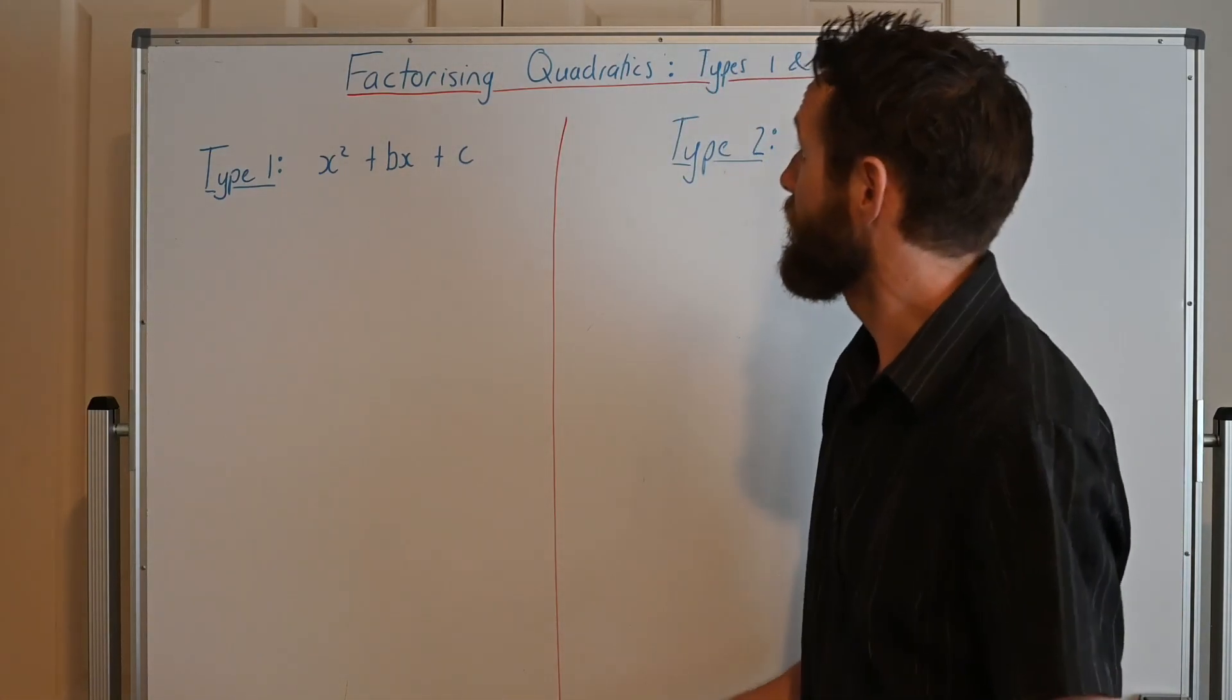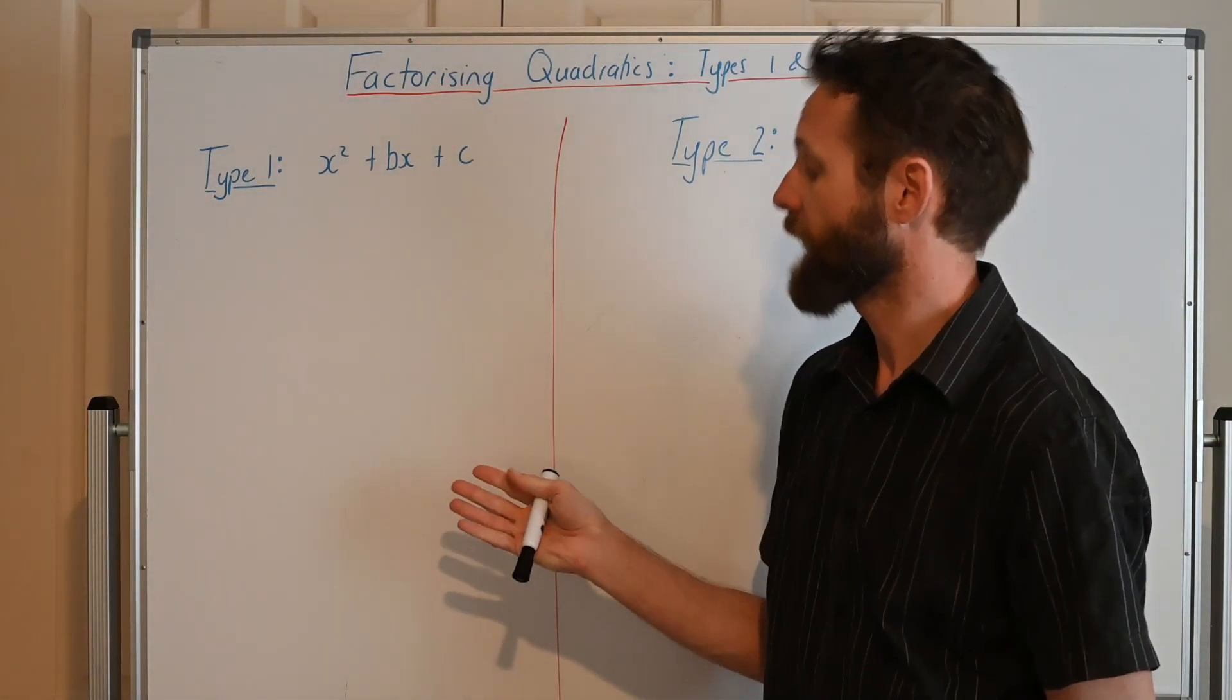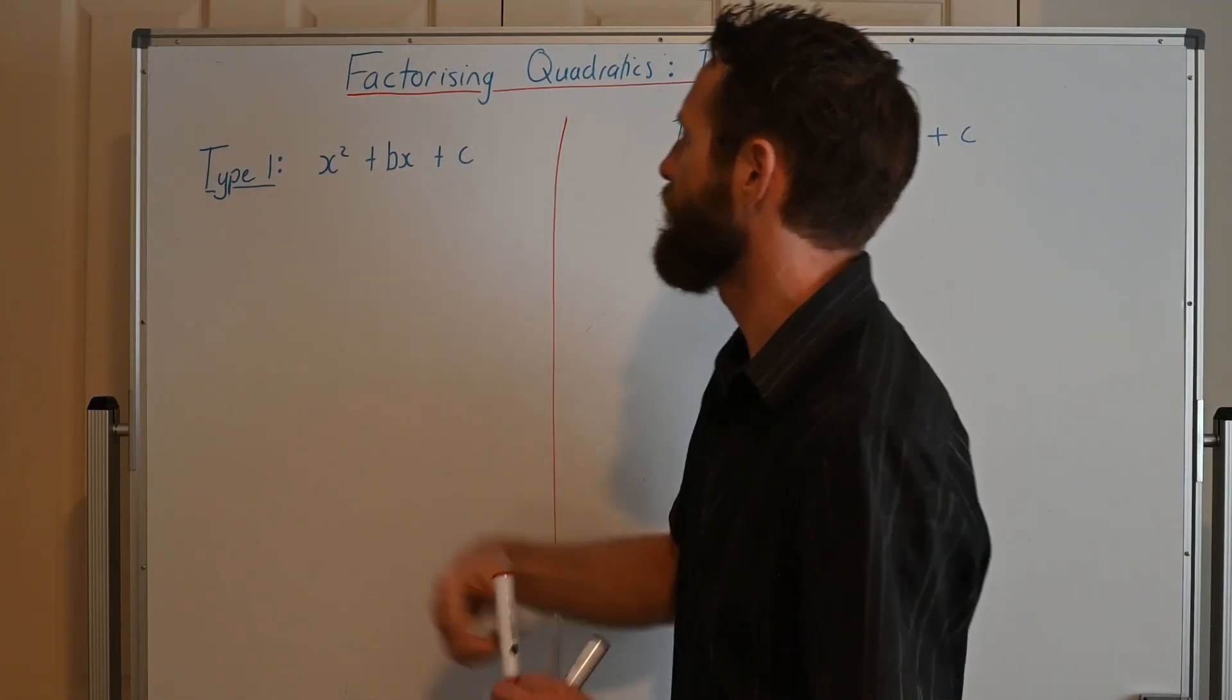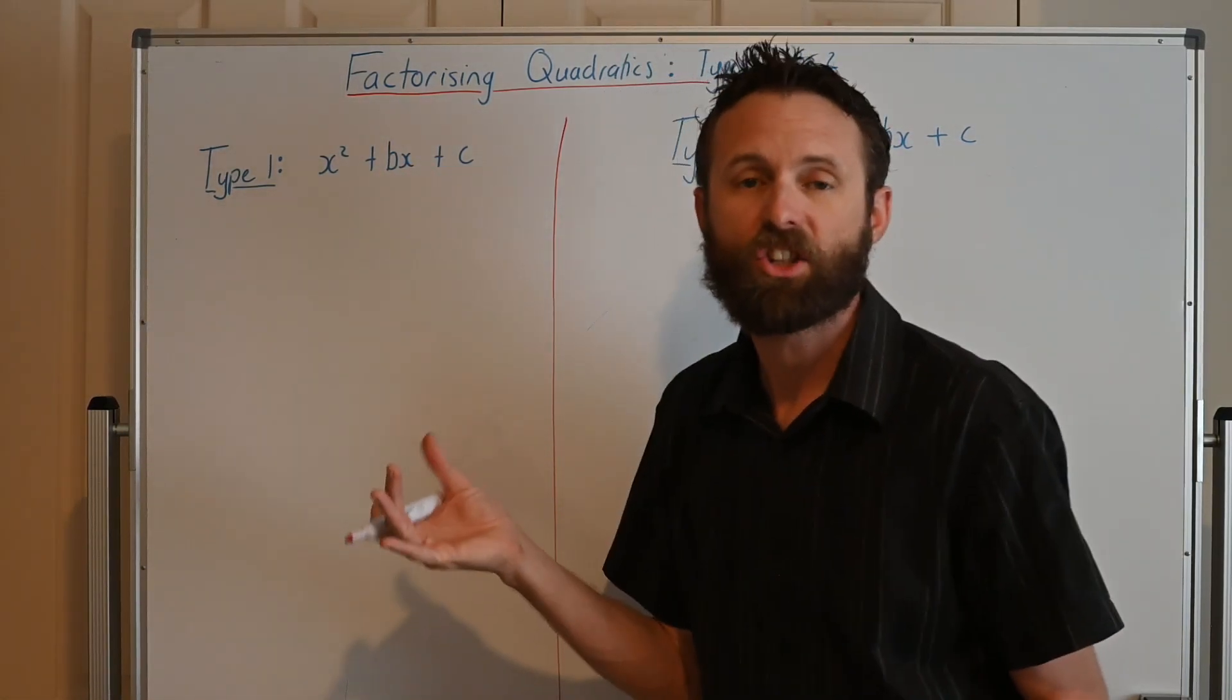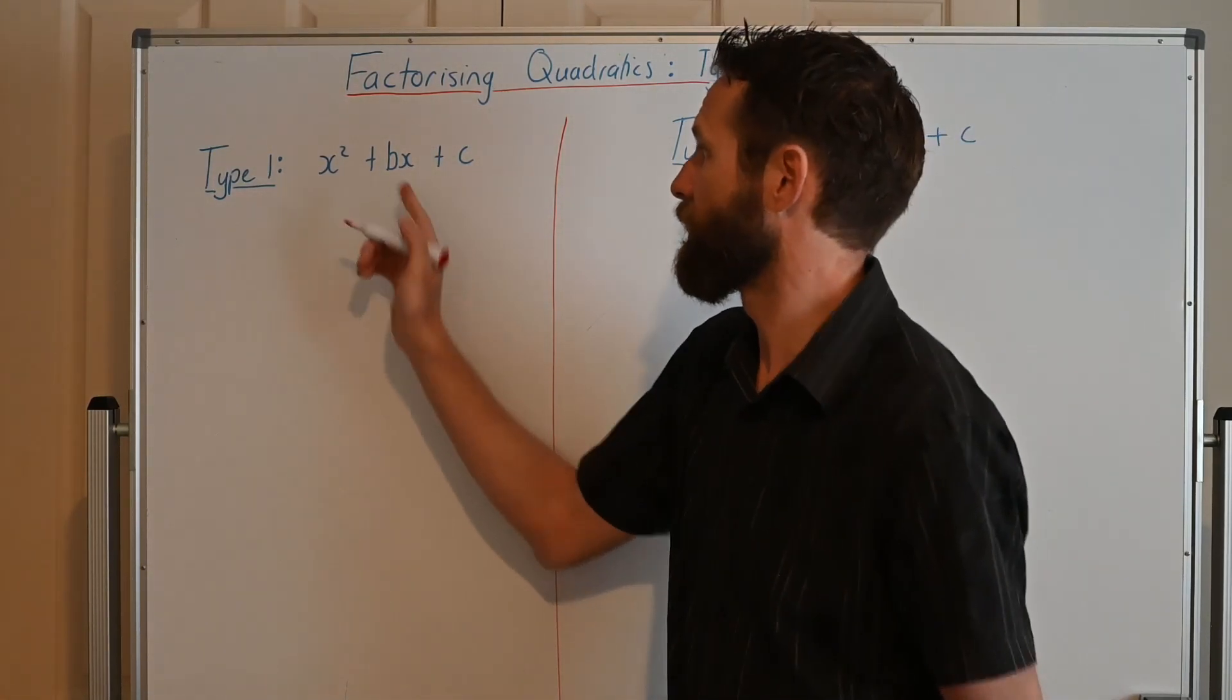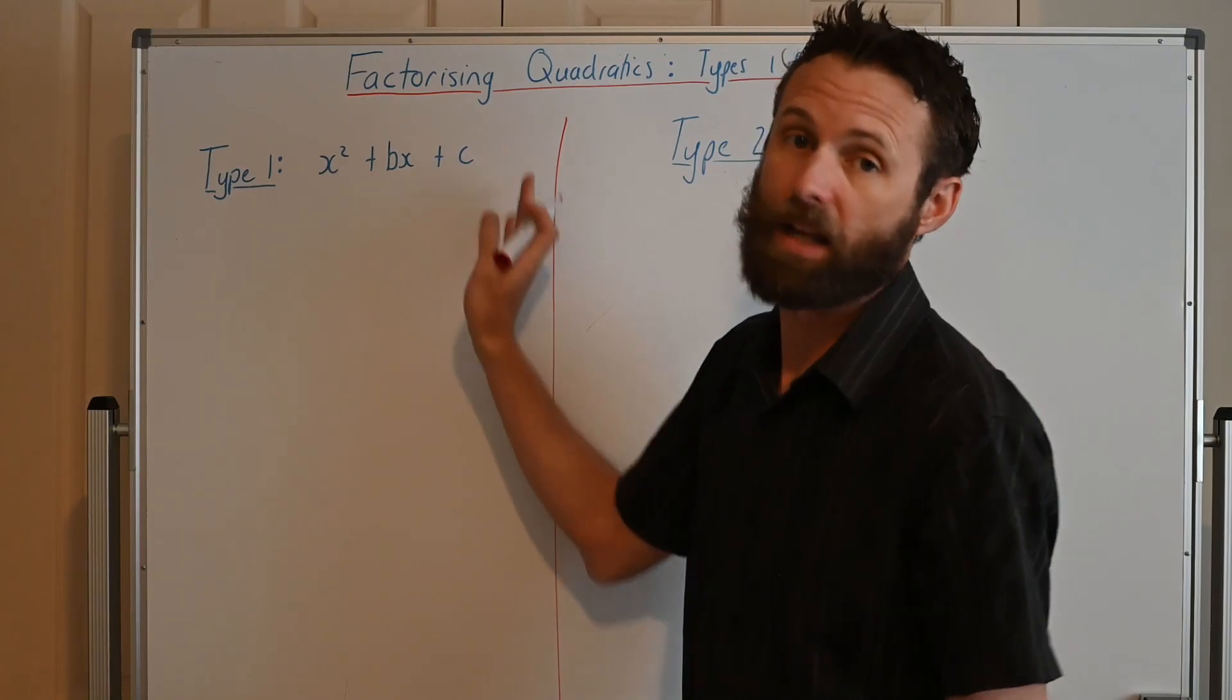Okay, well, let's talk about quadratics types 1 and 2. You've got a worksheet on this and the two types that we're looking at today, you can think of them as, for example, something like x² + bx + c. You'll notice that you've got this b. This b just essentially means a number, right? It's a constant. So it could be like a 4 or an 8 or whatever, and then c, just another number at the end there.